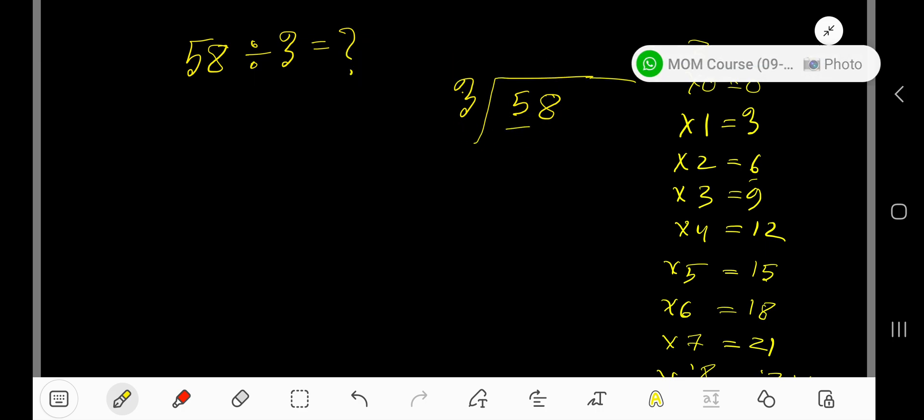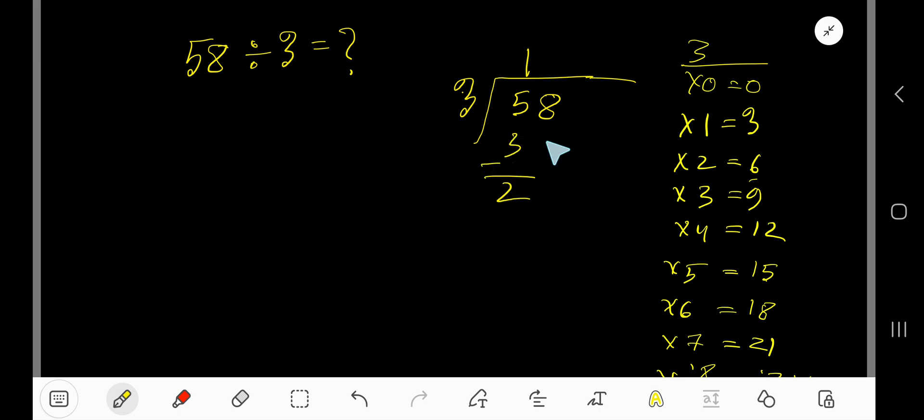3 goes into 5 how many times? Actually 1 time. 1 times 3 is 3. Subtract to get 2.